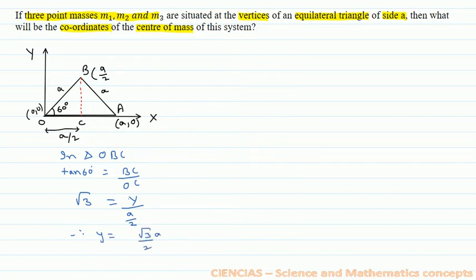Now we consider that at O the mass is m1, at A the mass is m2, and at vertex B the mass is m3. Given to us are masses m1, m2, and m3, and the side of the equilateral triangle is a.